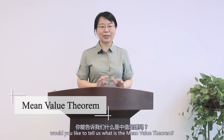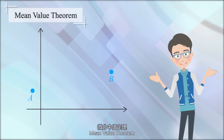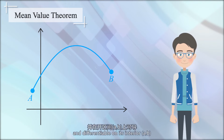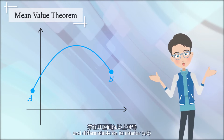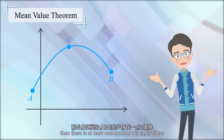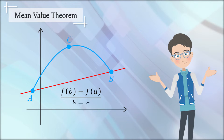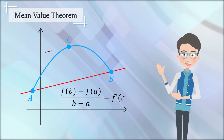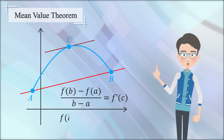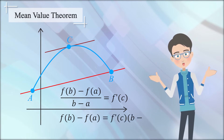Jordanson, would you like to tell us what is the mean value theorem? The mean value theorem is: if f is continuous on a closed interval [a,b] and differentiable on its interior (a,b), then there is at least one number c in (a,b) where f(b) minus f(a) over b minus a equals f prime of c. Or equivalently, where f(b) minus f(a) equals f prime of c times b minus a.